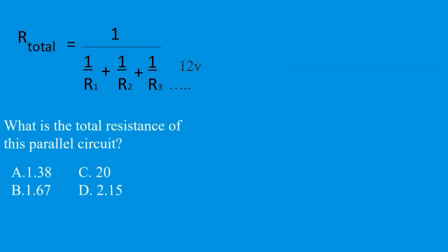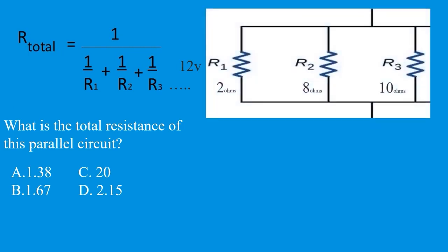Let's do another one. What is the total resistance of this parallel circuit? We look right away and we see that our smallest resistor is 2. So we know right away that C and D are incorrect. It's going to be either A or B. So let's move forward. We take 1 divided by 2 plus 1 divided by 8 plus 1 divided by 10.